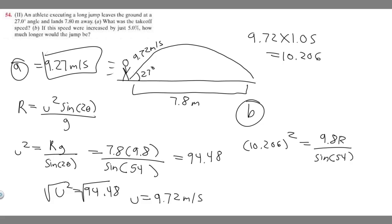If you want to go ahead and solve, all you've got to do is multiply both sides by the sine of 54. So the sine of 54 times 10.206 squared equals 9.8 times R. If we divide both sides by 9.8, we're going to get R by itself. R equals sine of 54 times 10.206 squared, divided by 9.8.